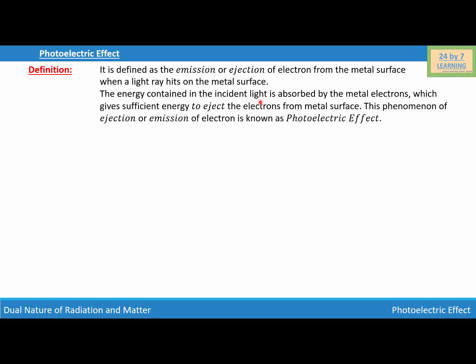The energy contained in the incident light is absorbed by the metal electrons, which gives sufficient energy to eject the electrons from the metal surface. This phenomenon of ejection or emission of electrons is known as photoelectric effect.